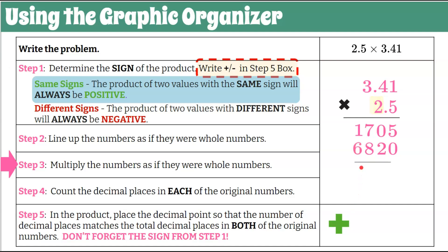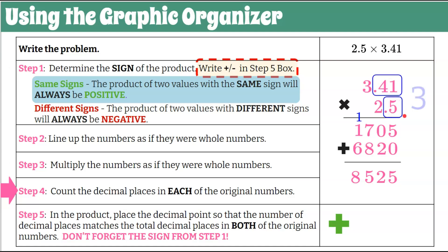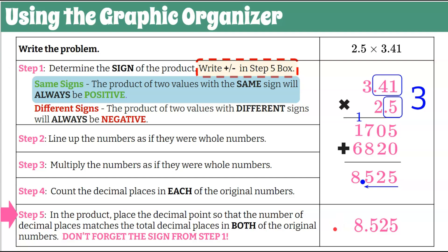Now we're going to add: five plus zero is five; zero plus two is two; seven plus eight is 15 — five and carry the one; one plus one is two, plus six is eight. Step four: we count the decimal places — two decimal places in 3.41 and one in 2.5. Step five: we place the decimal point three digits in. That gives us our product. We don't need the positive sign — without a sign it's positive. So 8 and 525 thousandths is our product.